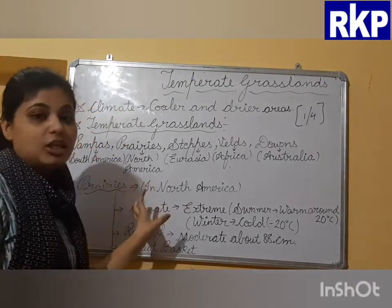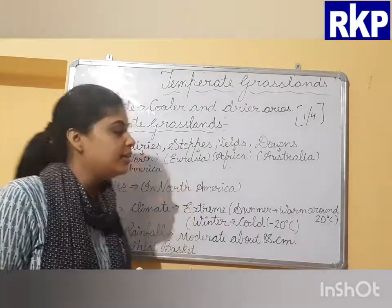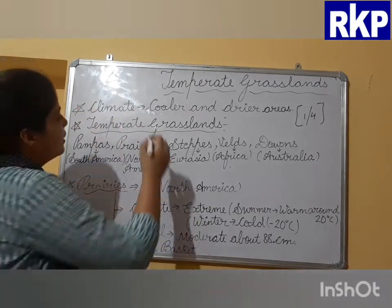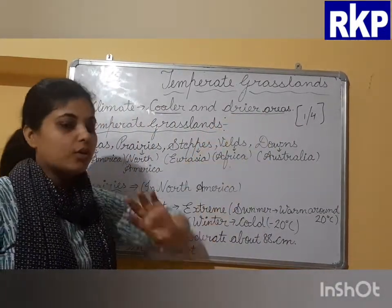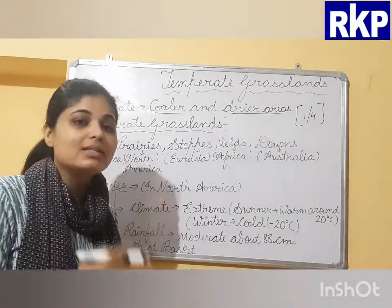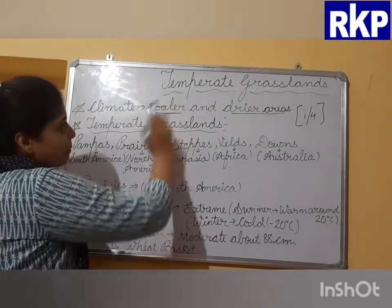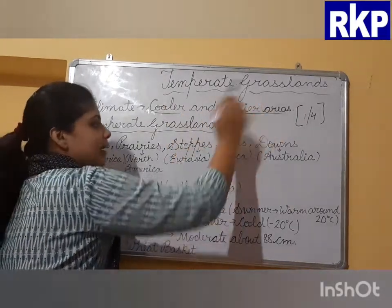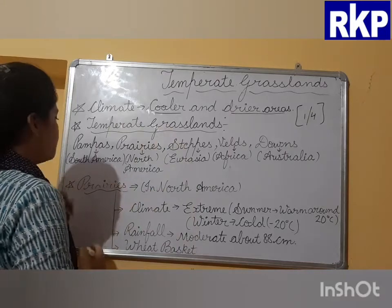Climate means the sum total of weather conditions prevailing at a particular place over a long period of time. The climate of temperate grasslands is cooler and drier compared to the torrid zone. The torrid zone is the heat zone of the earth because it receives maximum sunlight with stronger sun rays, whereas temperate grasslands have a moderate, cooler, and drier climate.